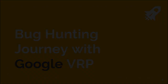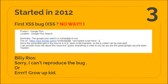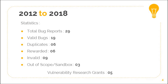I started in 2012 and this was my first bug — cross-site scripting, it was a nowhere cross-site scripting. I was telling the Google security team to put the encrypted script there themselves and test it, saying there is a vulnerability. And the reply was: it doesn't work like that, you have to send us a valid vector. So yeah, it started with that. From 2012 to 2018, I reported 29 bugs in total. 19 turned out to be valid, 6 were duplicates, and I got rewarded for 6 vulnerabilities.